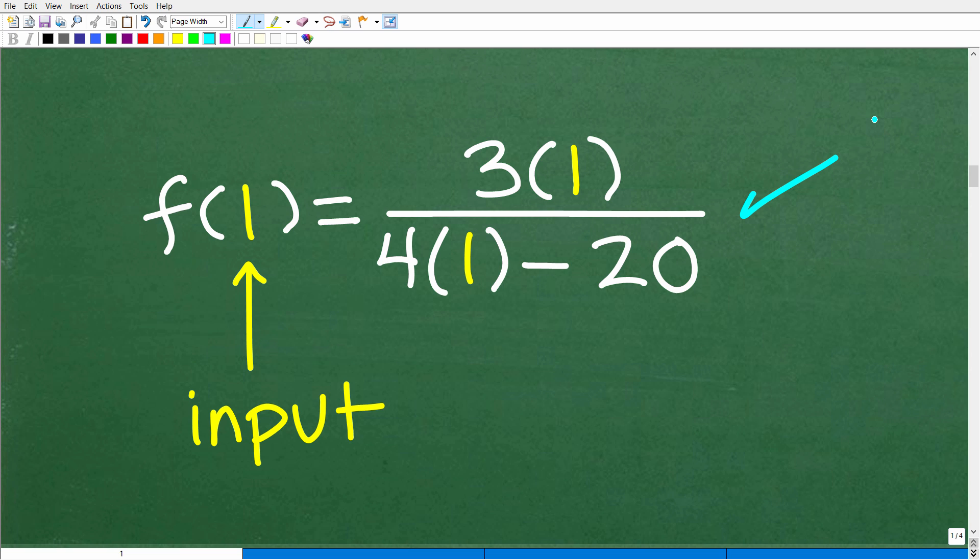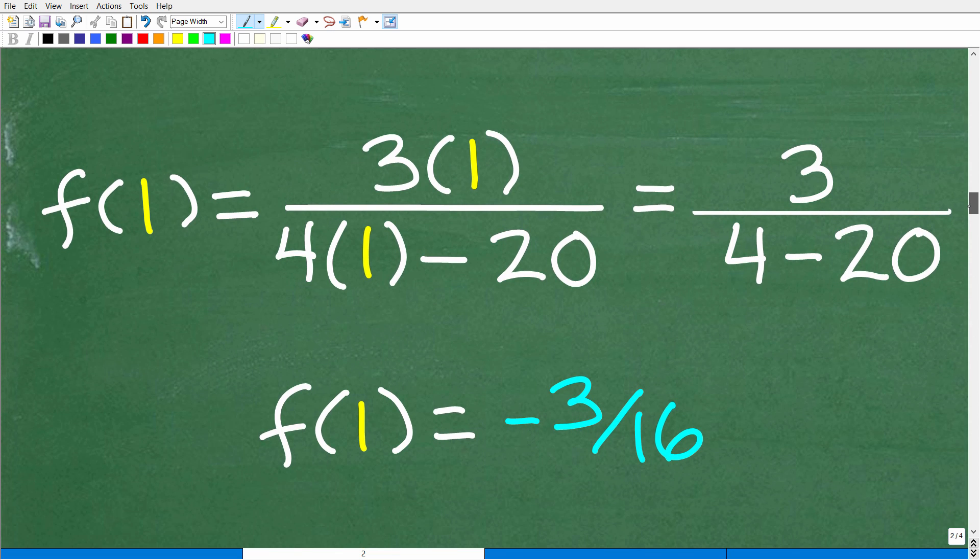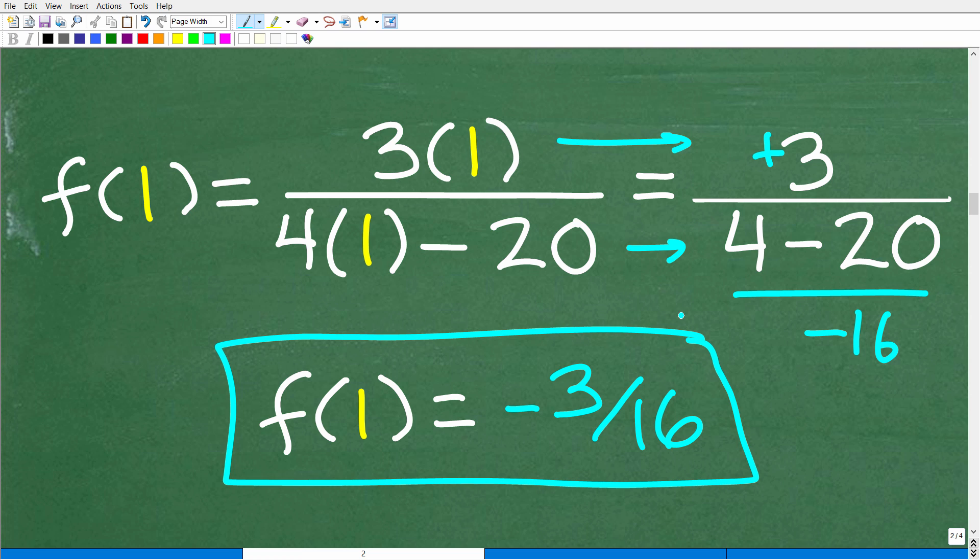And here we have a lovely numeric expression that we can simplify. All right, so not too difficult. Well, so f of 1 is going to be equal to 3 times 1, which, of course, is 3, over 4 times 1 minus 20, which, of course, is 4 minus 20. And now 4 minus 20 is negative 16. So we have positive divided by a negative. So this whole thing is negative 3 sixteenths. So f of 1 is equal to negative 3 sixteenths.